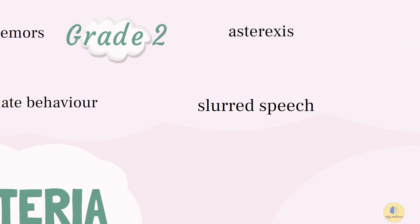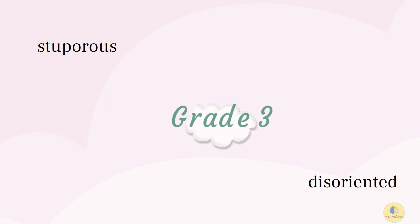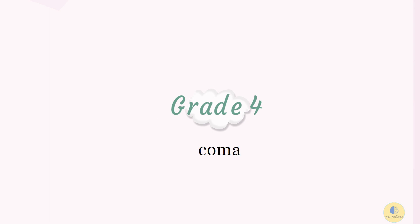Grade 3: Patients are stuporous but respond to stimuli. They are also disoriented by place and situation and may exhibit bizarre behavior. These patients are often admitted to the intensive care unit. In Grade 4, patients are in a coma and unresponsive, and are almost always admitted to the intensive care unit.